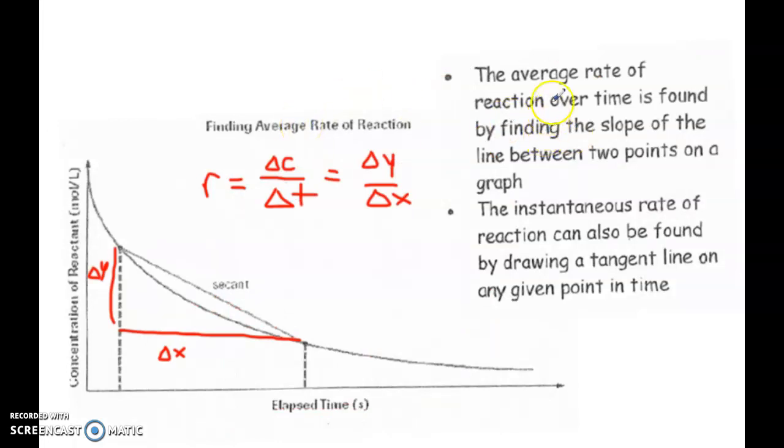Okay, so finding the average rate of a reaction over time. This is essentially what we just did in that example. So rate is change in concentration over change in time. So let's say we had a graph. So in this example, so time is in seconds. And we have concentration of a reactant. Okay, so we're not dealing with a product here. It's a reactant.